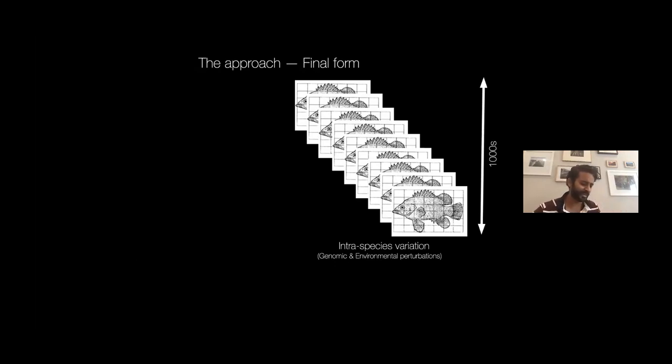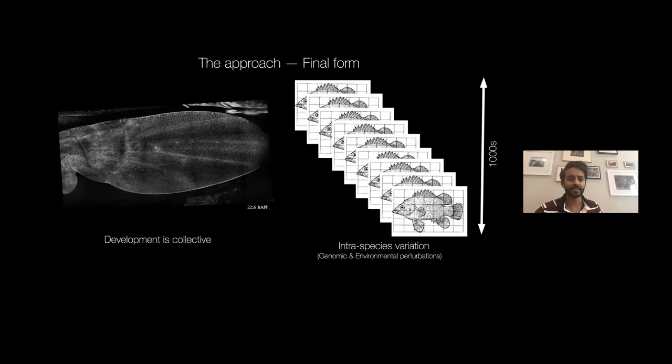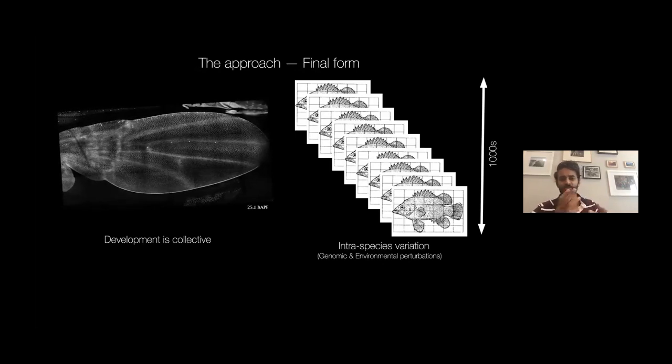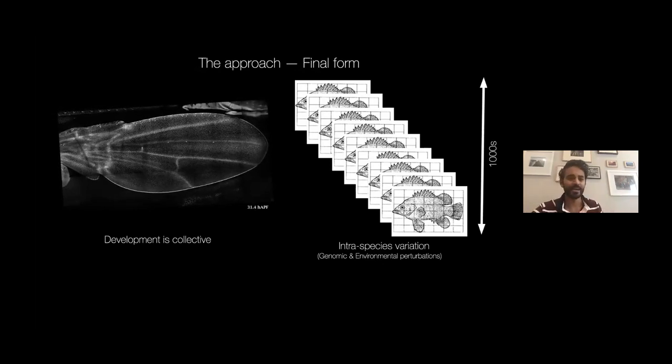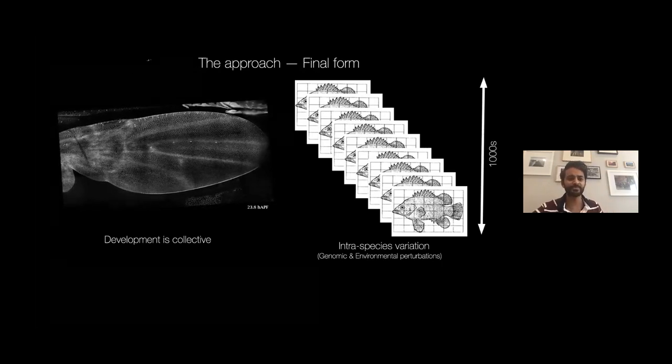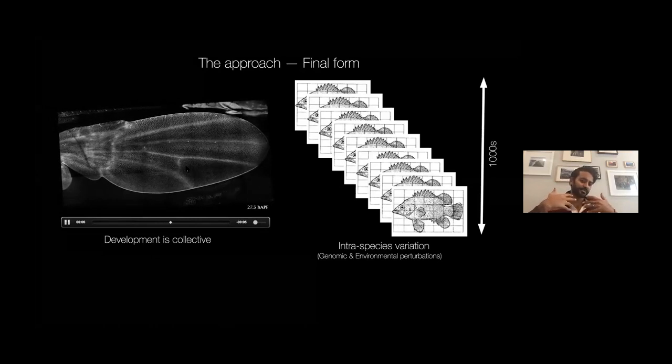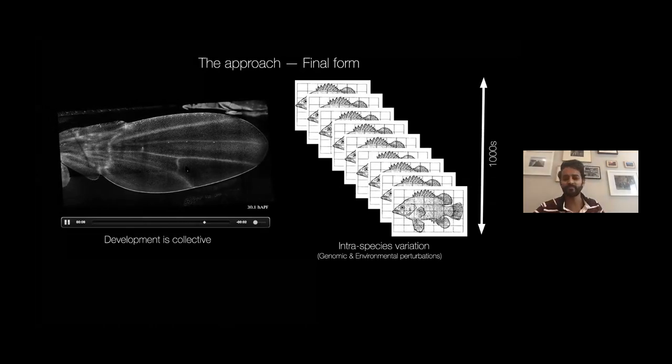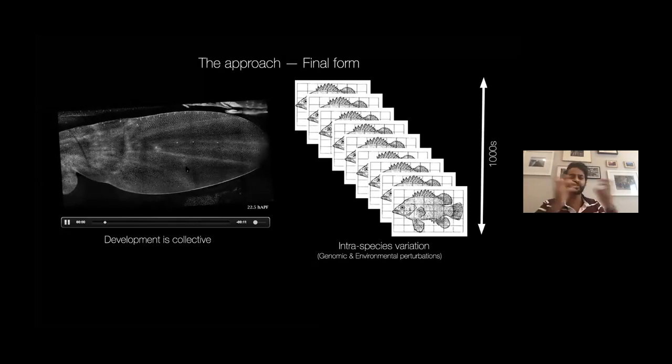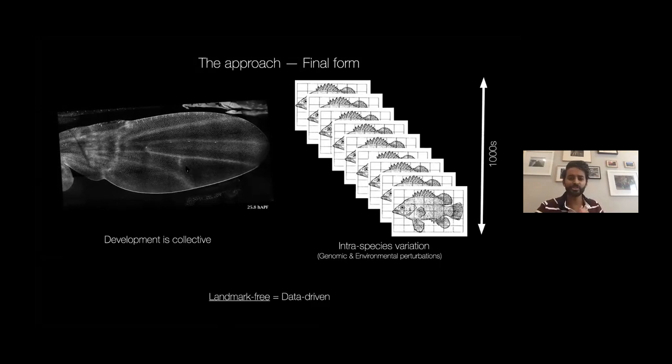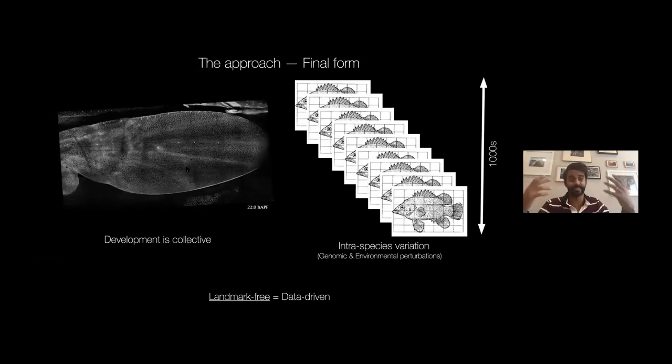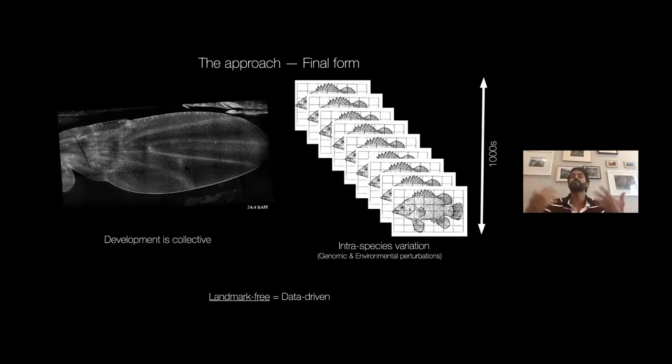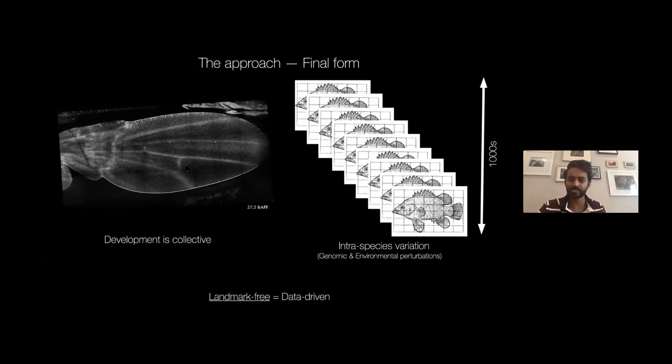I'm going to look at hundreds and thousands of outcomes of a developmental program, not across species but within a species, where I'm perturbing the genome and environment. I'm going to look at thousands of replicates and try to do what D'Arcy Thompson did but where the variation is much smaller. But something Amy highlighted: development is collective.